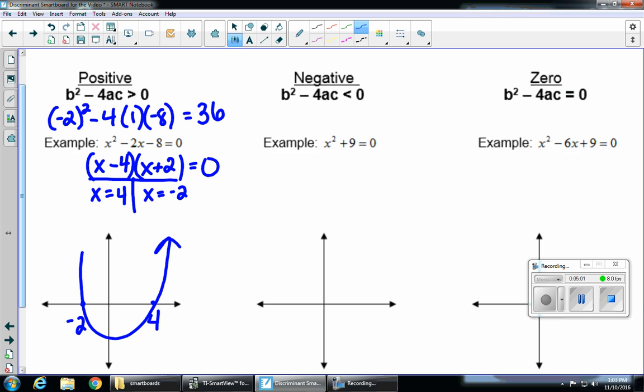So my graph will look like this. So I have 2 real solutions, so I have 2 x-intercepts, here and here. 2 real solutions means 2 x-intercepts, and that's when we have a positive discriminant.